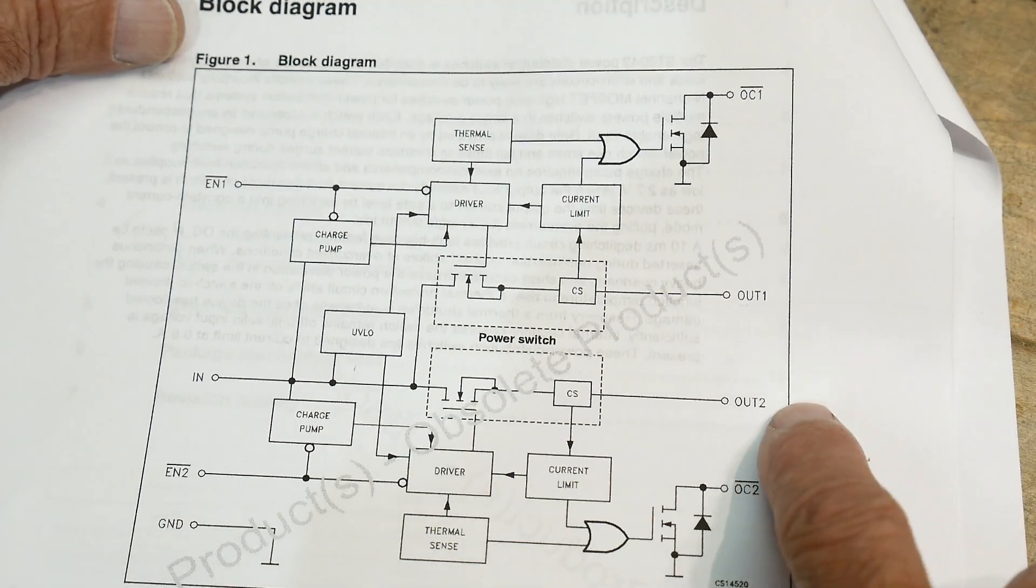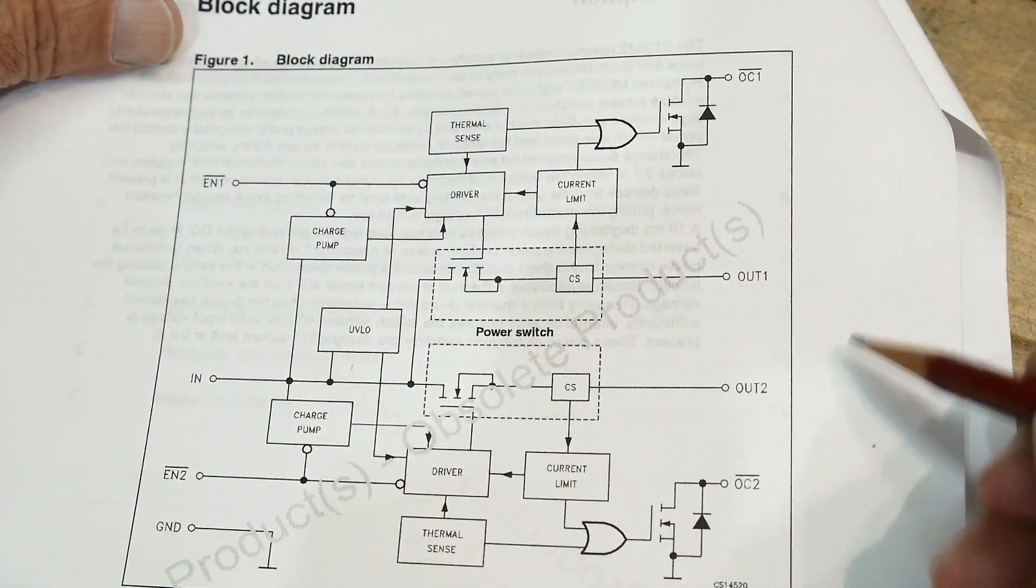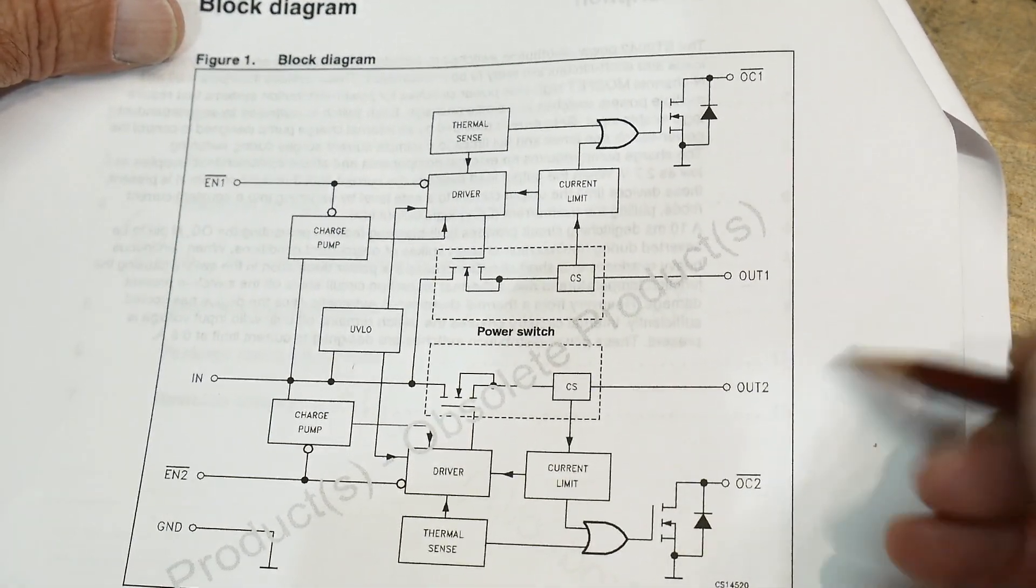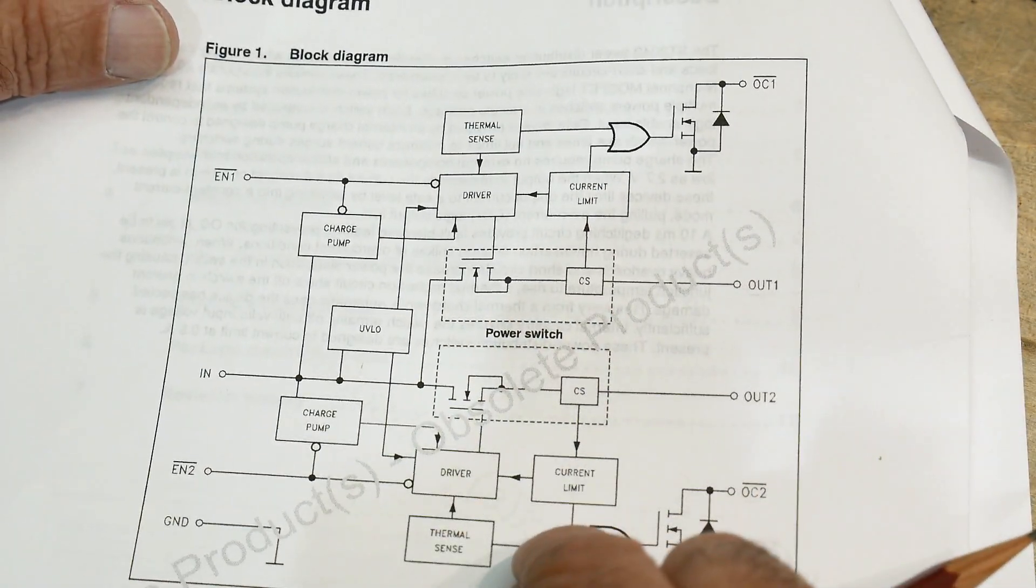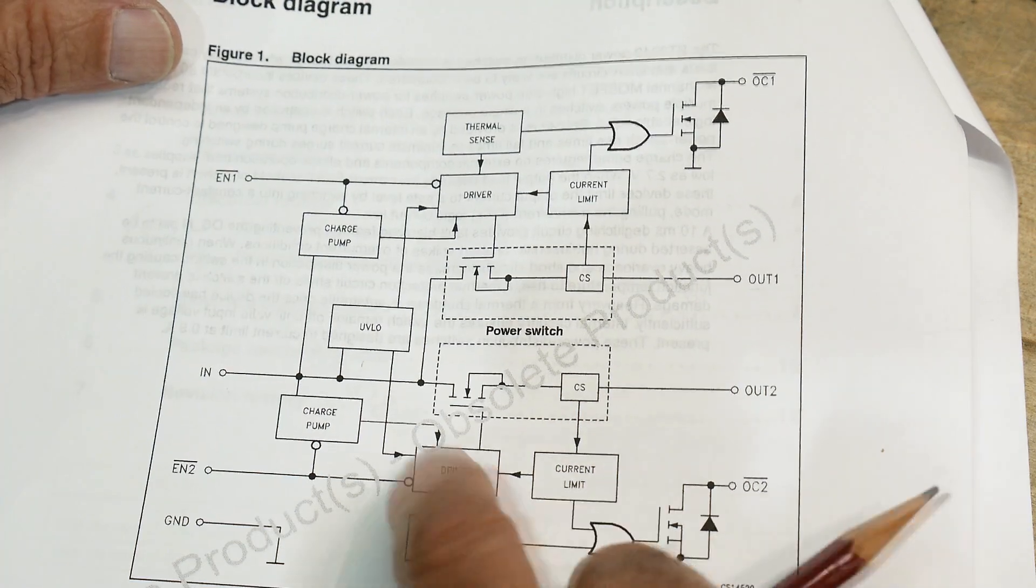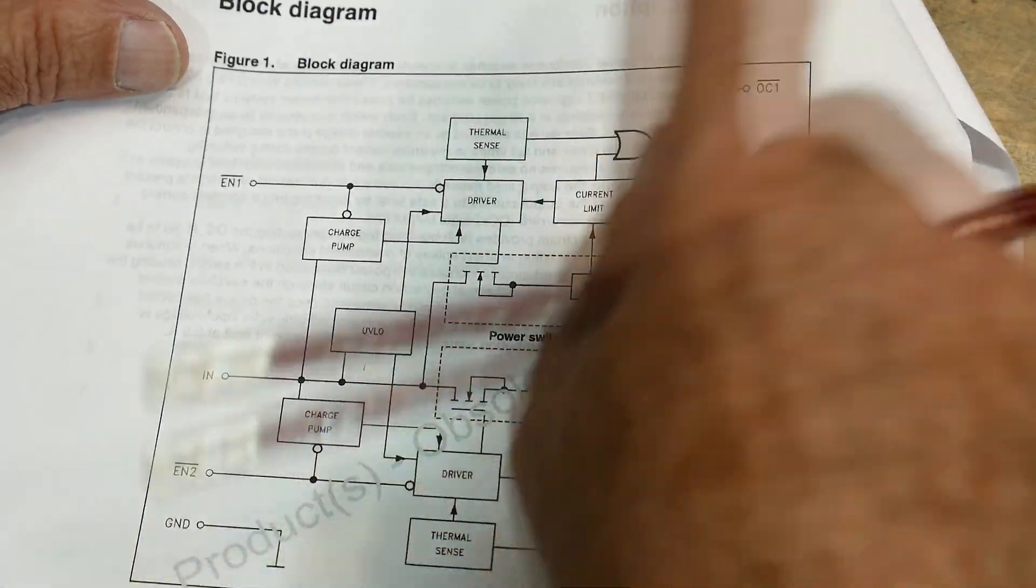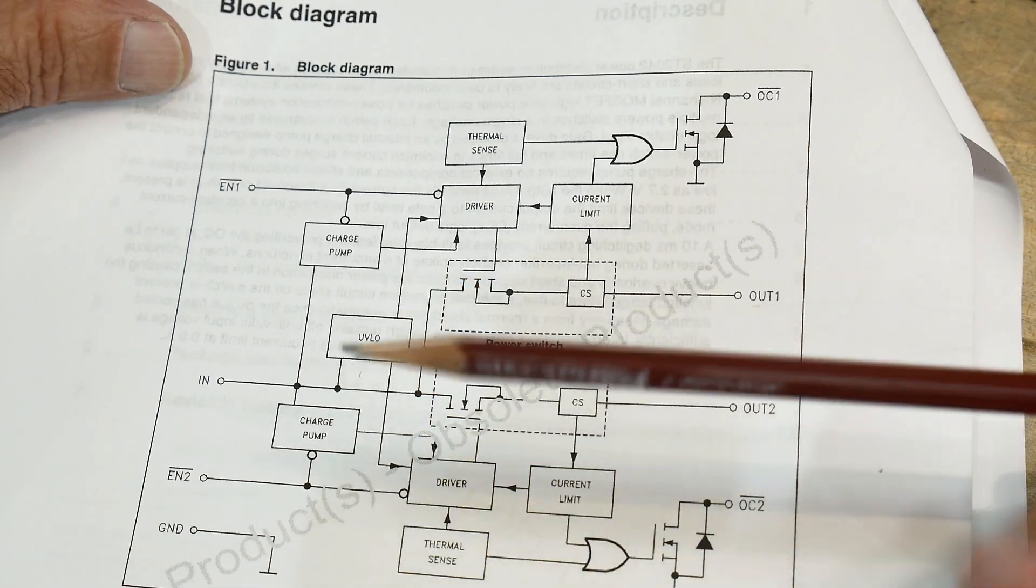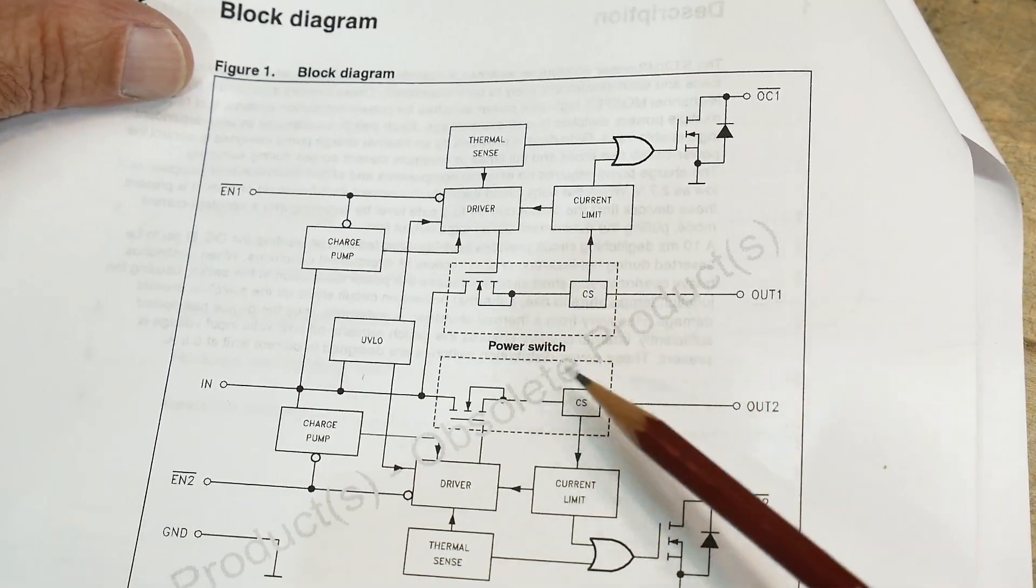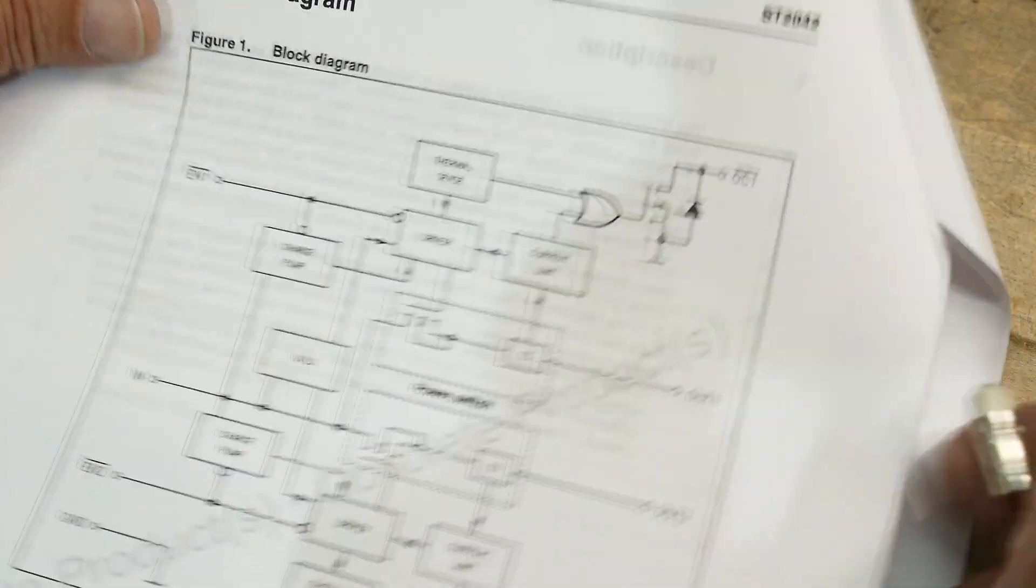You can either turn this one on or turn this one on. So you can have different circuits here and you can enable this circuit, enable this circuit. So it's like a high side relay. And it's got current limiting and thermal sense and some other things, current limit for the two channels. So yeah, it's an interesting part for a system design.